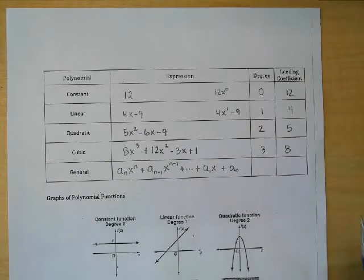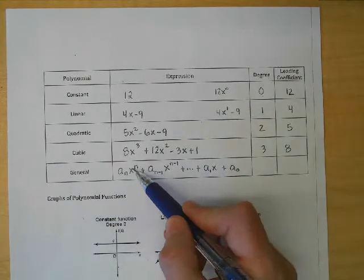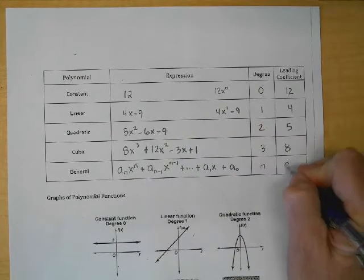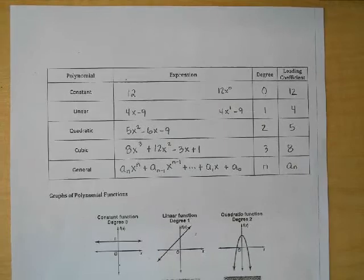See how it goes n, n-1? Our leading coefficient - excuse me - our degree is right here, this is an nth degree polynomial, and our leading coefficient is a_n. I know that looks a little bit weird, but start kind of looking at how that works.